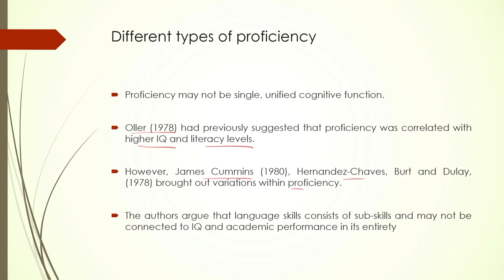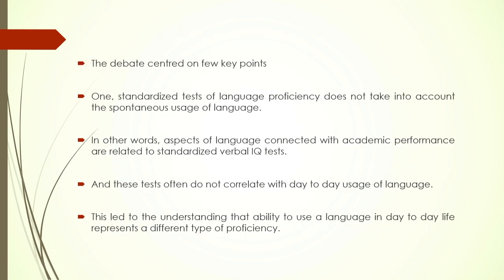There have been proposals that proficiency should not be taken as a homogeneous entity — proficiency may have different types within itself. Typically the tests of proficiency are correlated with higher IQ and literacy levels. James Cummins, Hernandez, and others have brought out variations within proficiency, arguing that language consists of sub-skills and cannot be entirely connected to IQ and academic performance. The standardized tests do not take into account the spontaneous, everyday use of language.